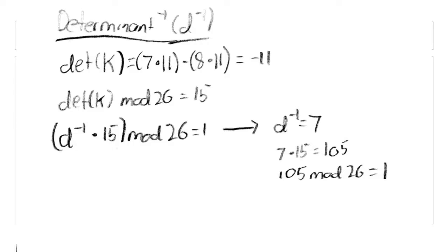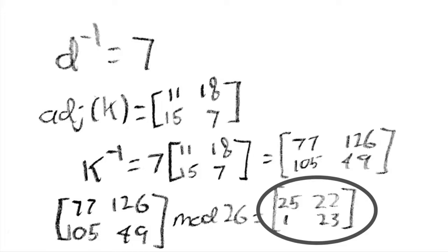Now, we can find the determinant inverse by finding whatever number multiplied by the determinant will result in 1 after being moduloed by 26. Which means that in this case, d inverse is equal to 7, as 15 times 7 is equal to 105. When modulo 26 is performed on 105, we get 1. Thus, d inverse equals 7.